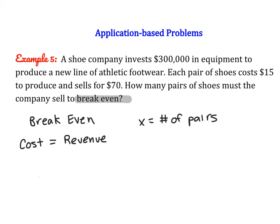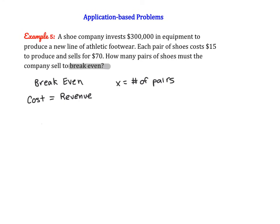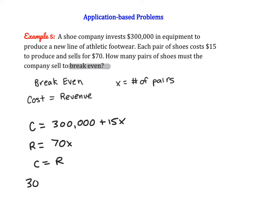We create a cost function and a revenue function. The cost function is C equals 300,000 plus 15x — the $300,000 is a sunk cost, plus $15 per pair produced. The revenue function is R equals 70x, since each pair sells for $70. To find the break-even point, we set cost equal to revenue: 300,000 plus 15x equals 70x, and solve.